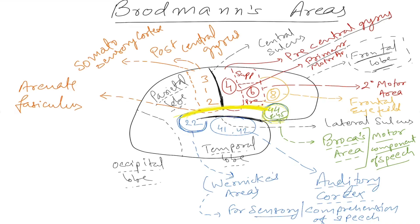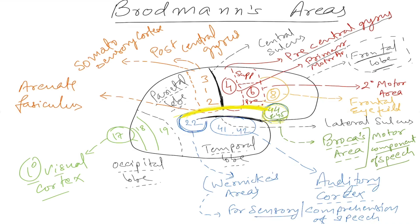The most important area for vision is area number 17, 18, and 19, located in the visual cortex. Area number 17 is your primary visual cortex, also called the primary visual area, and is very important for central vision from the central retina. The central retina sends its message directly to area number 17. Area number 18 and 19 serve as association areas that help understand and interpret what is being seen in area number 17.